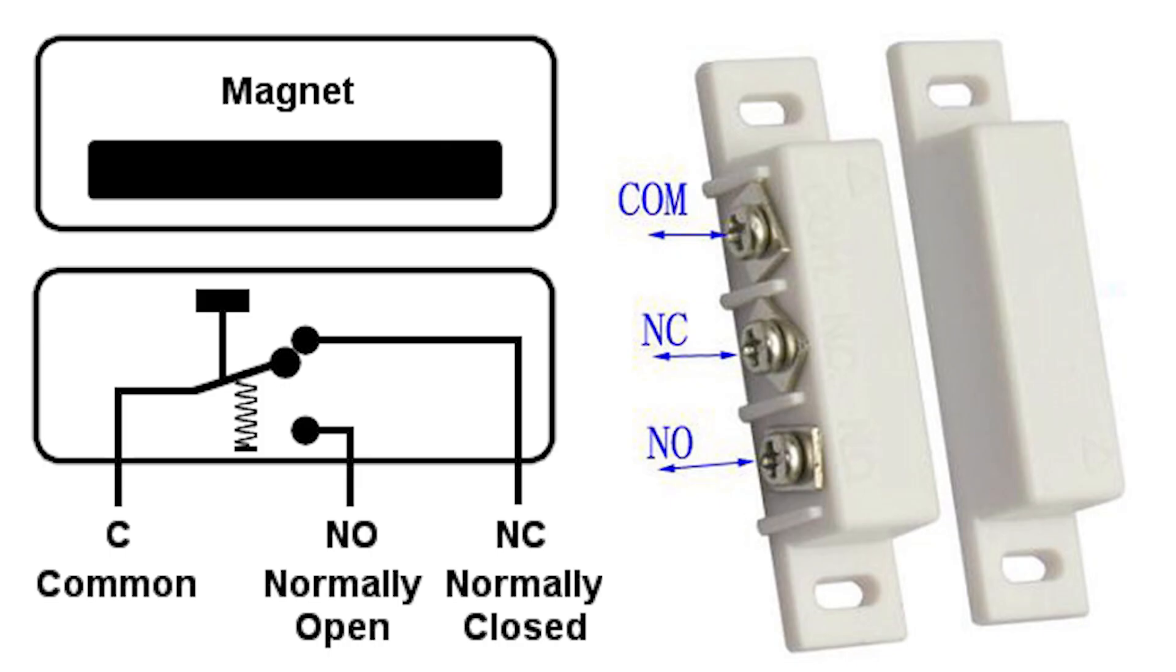Most door contact sensors can be wired either way. Since the two forms of reed switches can be bypassed by different magnetic poles, we need a method to determine the state of the switch.